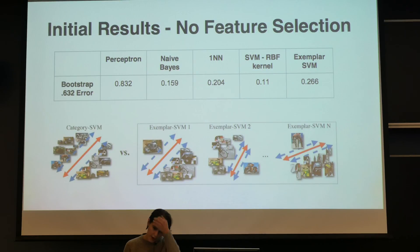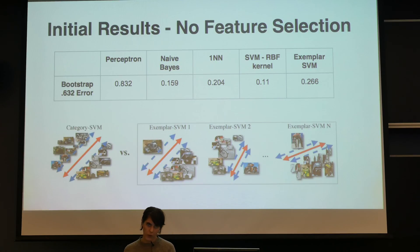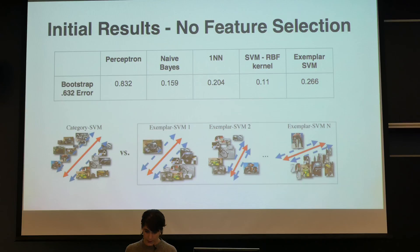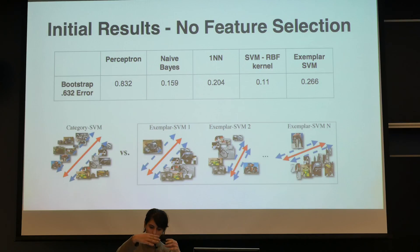For our baselines without feature selection, we used vanilla classifiers: SVM with the RBF kernel — we tried different kernels and found RBF worked best — and also exemplar SVMs. From the literature, exemplar SVMs seemed to work well when the feature space is larger than the number of samples. They use an ensemble of SVMs where each exemplar of a class is the single positive sample and everything else is negative. However, they didn't outperform the SVM with the RBF kernel.